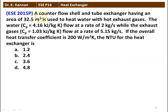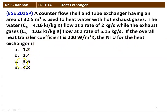Next problem: a counter flow shell and tube heat exchanger having an area of 32.5 m² is used to heat water with hot gases. For water, specific heat is 4.16 kJ/kg·K and flow rate is 2 kg/s. Exhaust gases have CP = 1.03 kJ/kg·K and flow rate 5.15 kg/s. If the overall heat transfer coefficient is 200 W/m²·K, the NTU of the heat exchanger is: 1.2, 2.4, 3.6, or 4.8. The answer is 1.2.